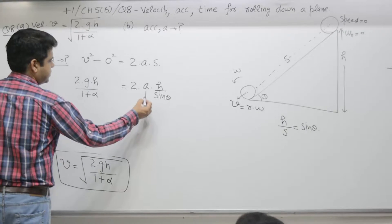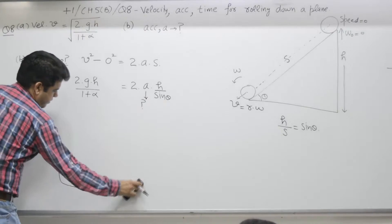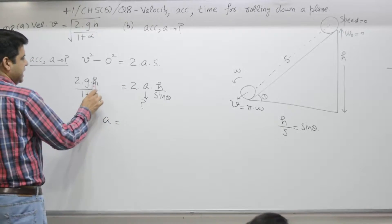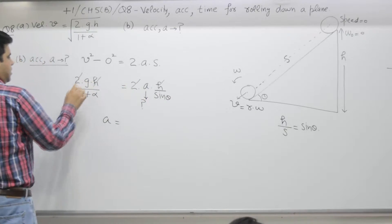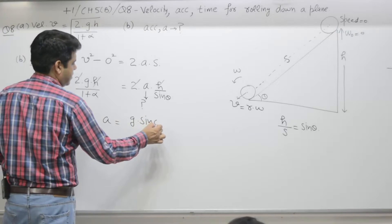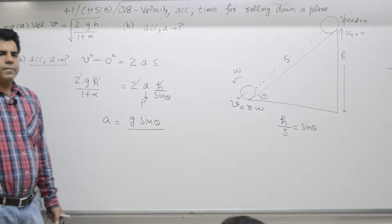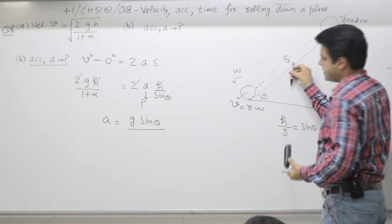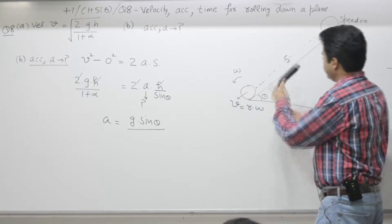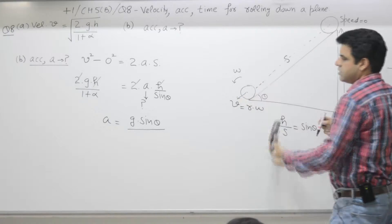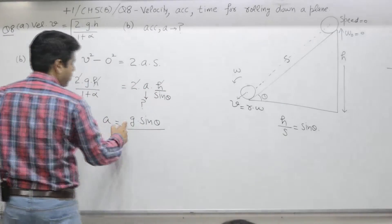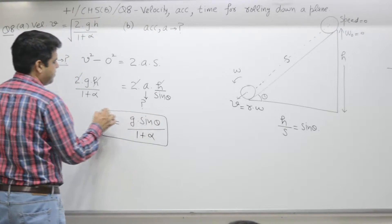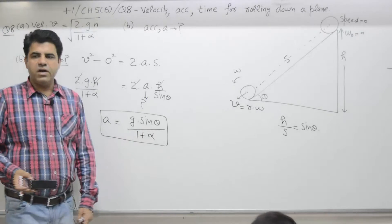Solving for A: the h's cancel, giving us a = g·sinθ/(1+α). For comparison, if an object slides, the component along the plane is mg·sinθ divided by m, giving acceleration g·sinθ. But for rolling, the acceleration is less because it is divided by (1+α).